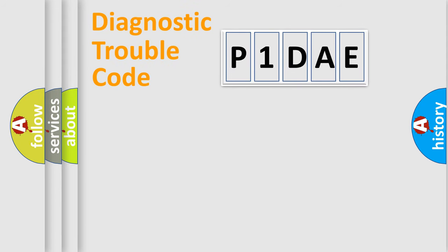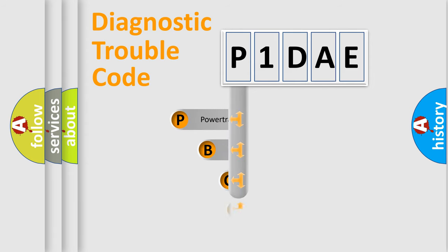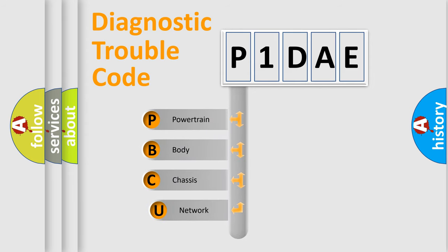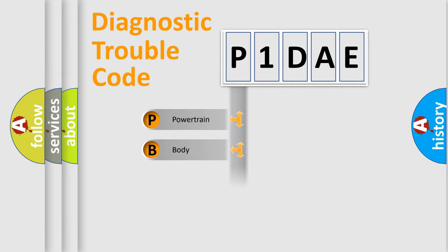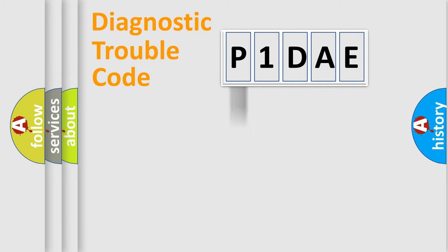Let's do this. First, let's look at the history of diagnostic fault code composition according to the OBD2 protocol, which is unified for all automakers since 2000. We divide the electric system of an automobile into four basic units: Powertrain, Body, Chassis, and Network.